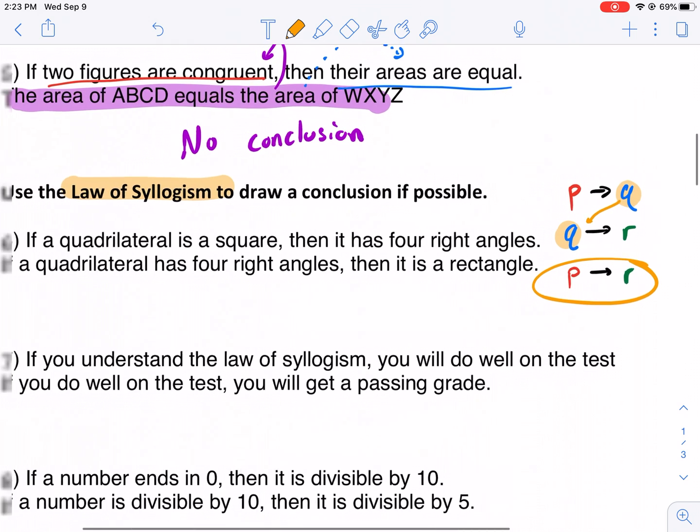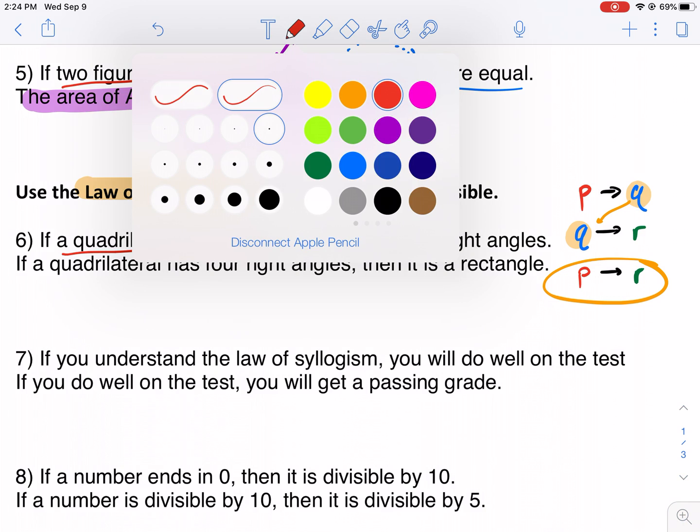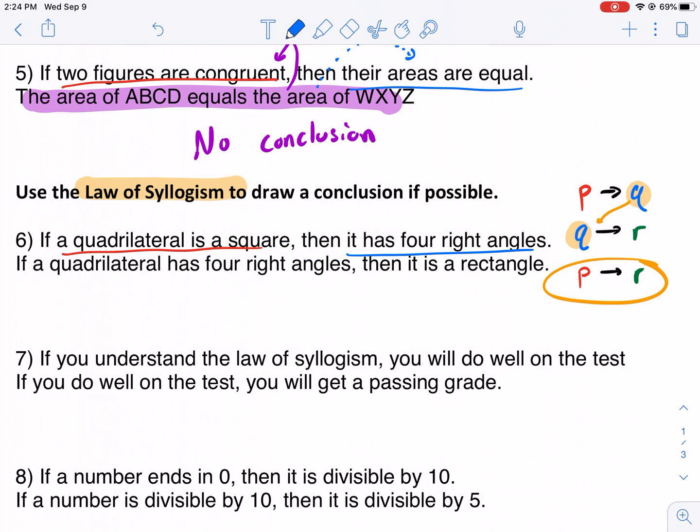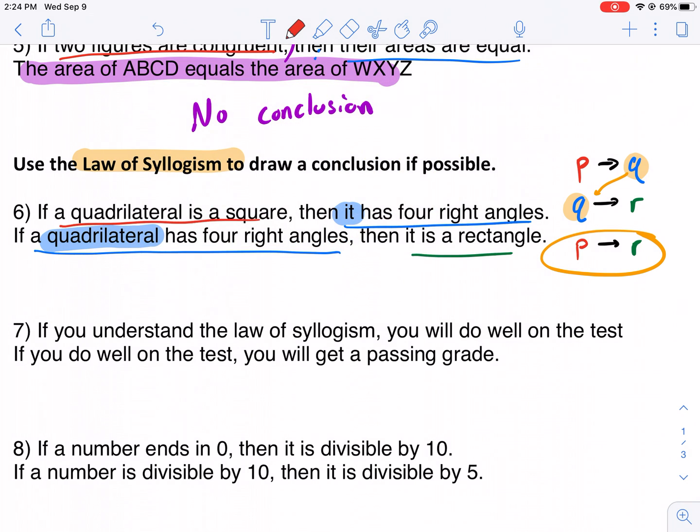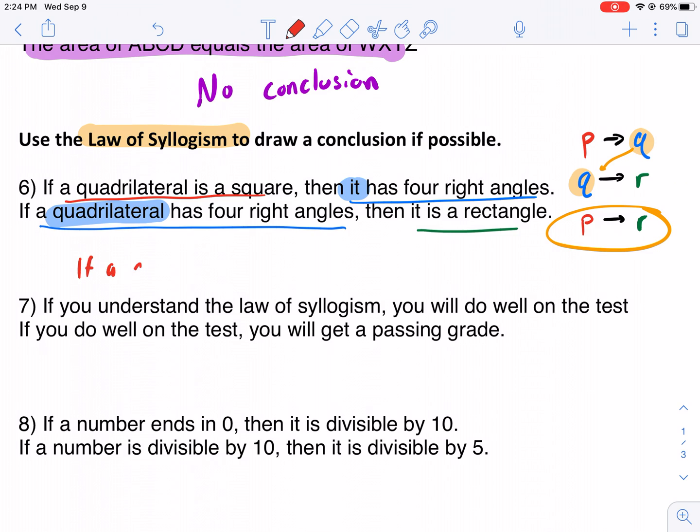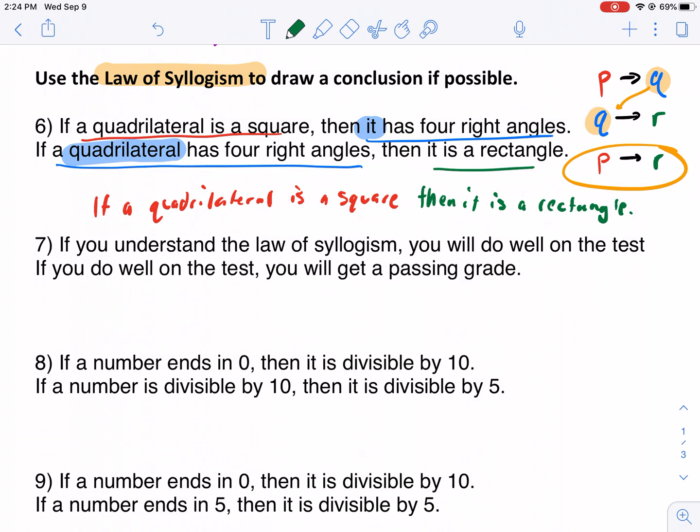If a quadrilateral is a square, hypothesis, then it has four right angles, conclusion. Now the next statement, the next conditional statement needs to have the conclusion as a hypothesis. A quadrilateral has four right angles. It just gives a little bit more information but it's saying the same thing. It omitted quadrilateral here and said 'it'. It is the same thing as quadrilateral. It matches. This matches, we're good. And what's the final thing it's saying? It's saying it is a rectangle. So now we can write our conclusion statement. We can conclude if a quadrilateral is a square, then it is a rectangle. And that's true. A square is a type of rectangle. So that's our logical conclusion we can draw.